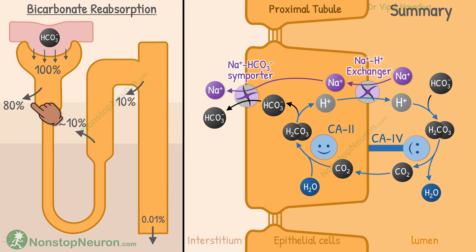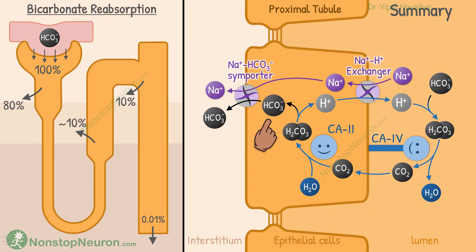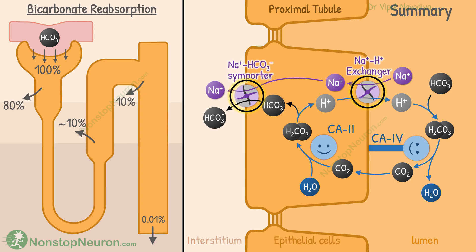80% of the filtered bicarbonate is reabsorbed from the proximal tubule, 10% from the thick ascending limb, and 10% from the distal tubule and collecting duct. The process of reabsorption includes the secretion of hydrogen ions into the lumen, conversion of bicarbonate into carbon dioxide, entry of carbon dioxide into the cell, formation of bicarbonate in the cell, and its exit at the basolateral membrane. The overall process is the same in all segments; the only difference is in the exact transport protein involved in the movement of hydrogen and bicarbonate ions.